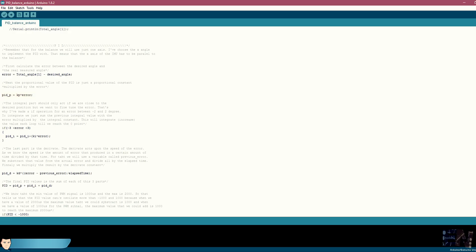Next, we create the integral value and finally the derivative values dividing the subtraction between the last error and the actual error by the elapsed time. That will give us the speed in degrees per second. Finally, the total PID output is the sum of these three parts.